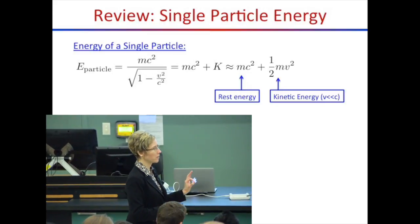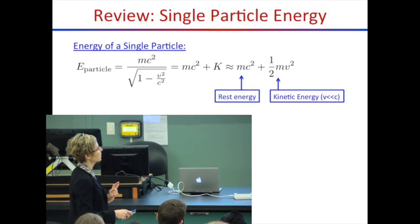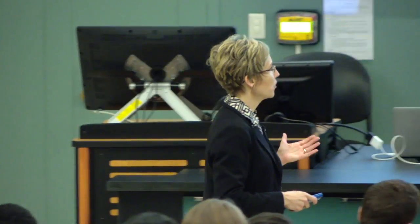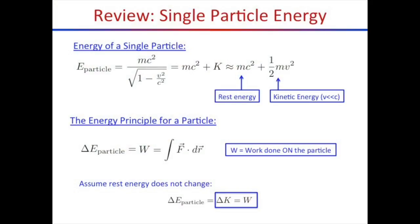Do you have any questions from last time? So we can make an approximation if the speed of the particle is much less than the speed of light — say 0.1% or less — and we pull out the rest energy mc squared plus one half mv squared. The single particle energy is its rest mass plus its kinetic energy. The energy principle for a particle — Physics 172 was based on two big ideas: the energy principle, which is that energy is conserved, and the momentum principle, which is that momentum is conserved. The energy principle says I can change the energy of a particle by doing work on it. The work is defined as the integral of f dot dr. Assuming the rest energy doesn't change, the change in particle energy is just due to kinetic energy. So when I do work on a particle, I can speed it up.